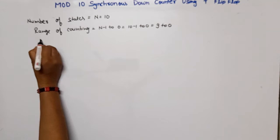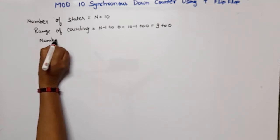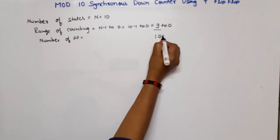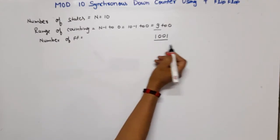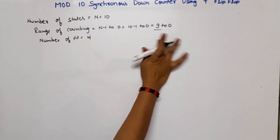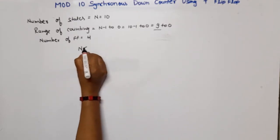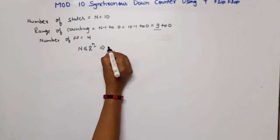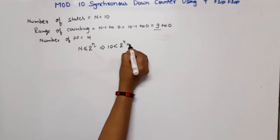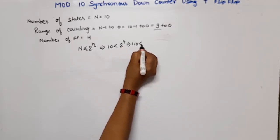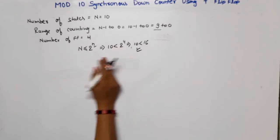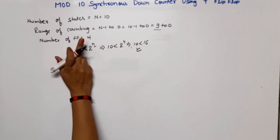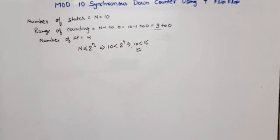Now, how many flip-flops are required? The highest number is 9, which is 1001 in binary — that is 4 bits, so 4 flip-flops are needed. Another method: N must be less than or equal to 2 raised to power n. Here 10 is less than 2 to the power 4, which equals 16. Condition satisfied — number of flip-flops is 4.